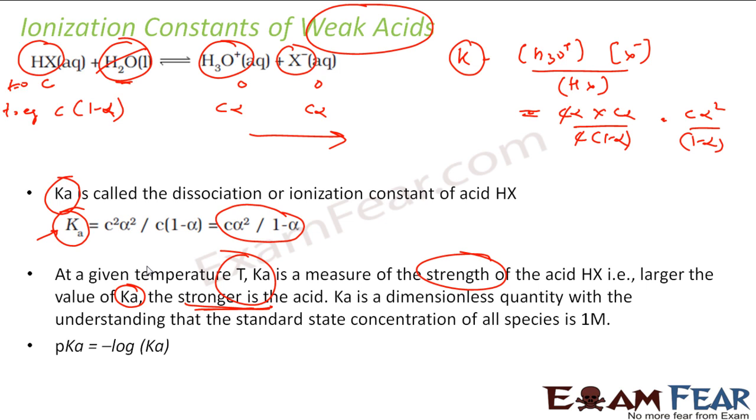So since we had the pH and it became a very fashionable term, we use the p in other things also. Now pKa is nothing but minus log of Ka concentration. So pH was minus log of H plus concentration, here we have pKa is nothing but minus log of Ka. Similarly we will learn about pKb also. pOH also is a term, it is nothing but minus log of OH minus concentration. Similarly we have pKa that is minus log of Ka.